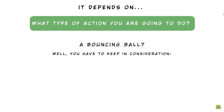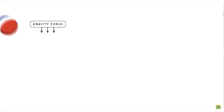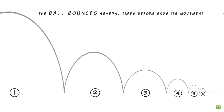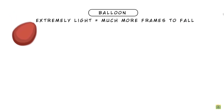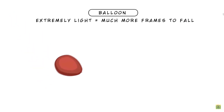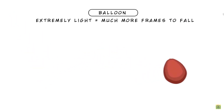you have to take into consideration the type of object, its weight, the gravity force, the type of contact surface, and other aspects. A rubber ball would have an eccentric bounce — gravity brings it down, and it bounces several times before ending its movement. The height of the bounce gradually decreases with forward movement. But if we have a balloon instead, it will take much more frames to land because it's much lighter, so the timing will be slower.